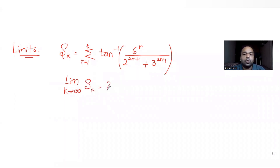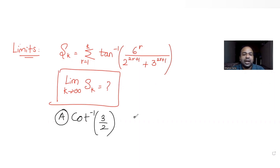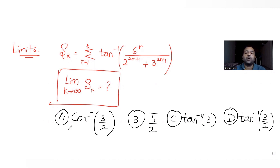The options given to us are: option one, cot inverse of 3/2; option two, pi/2; option three, tan inverse of 3; and option four, tan inverse of 2. Let's figure out which one of the answers is correct for the value of this limit.